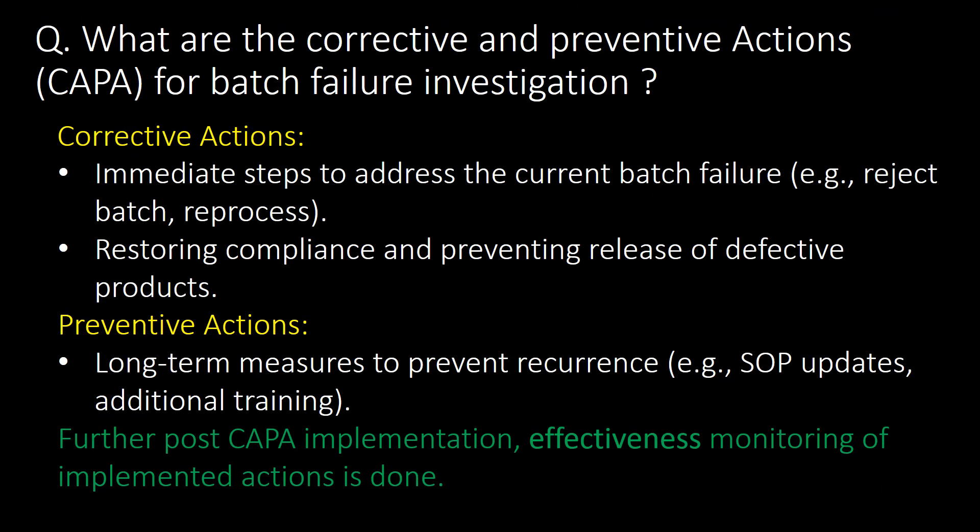What are the corrective and preventive actions (CAPA) for batch failure investigations? Corrective actions are immediate steps to address the current batch failure — for example, reject or reprocess the batch — taken to restore compliance and prevent release of defective products. Preventive actions are long-term measures to prevent recurrence, such as SOP updates or additional training. Post-implementation, effectiveness monitoring of the CAPA actions is conducted.